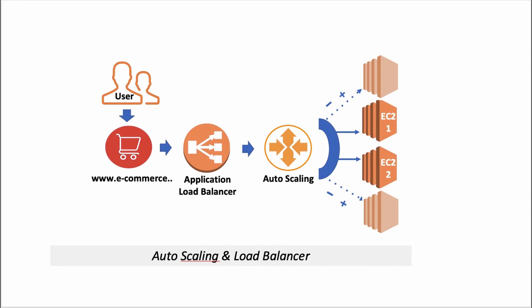Amazon EC2 autoscaling is a component that helps you ensure that you have the correct number of Amazon EC2 instances available to handle the load for your application. Thanks to autoscaling, we can add or remove a new virtual machine when it is necessary. You can expand your system to respond to demand according to the size of the request you receive, and automatically collapse when the demand decreases. Today, I am going to show you how to set up autoscaling on the AWS console. If you are ready, let's get started.